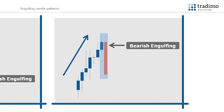And finally, the second candlestick body must be opposite in colour to the first candlestick body. For example, if the first candlestick is bullish, the second candlestick must be bearish.